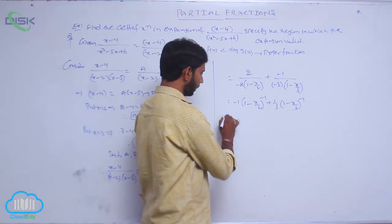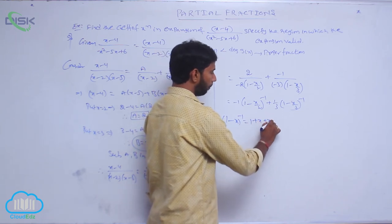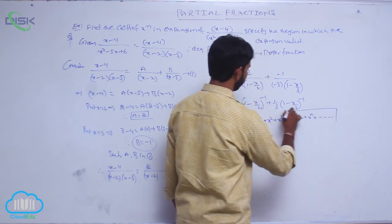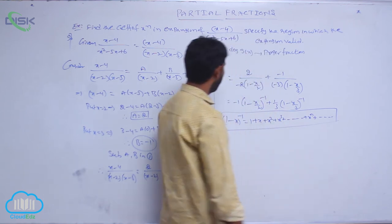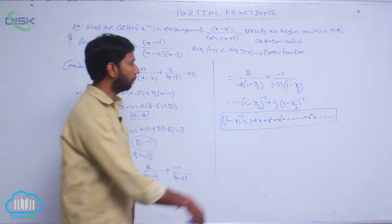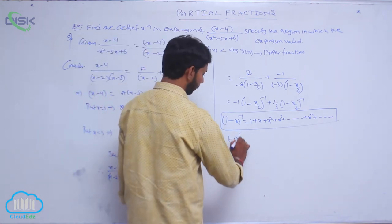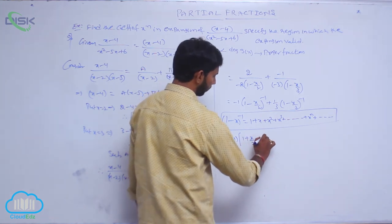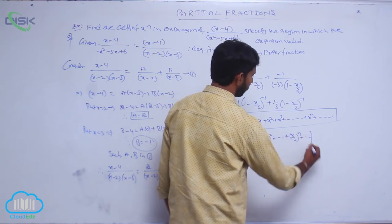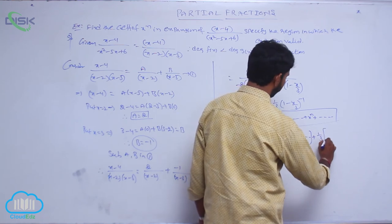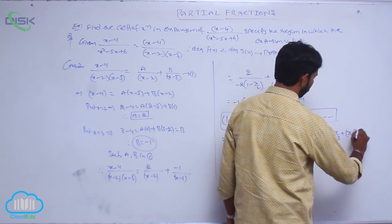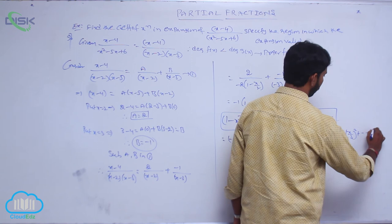The formula is (1 minus x)^(minus 1) equals 1 plus x plus x squared plus x cubed plus ... plus x^n plus and so on. Applying the formula: minus 1 times (1 plus x/2 plus (x/2)^2 plus ... plus (x/2)^n plus ...) plus (1/3)(1 plus x/3 plus (x/3)^2 plus ... plus (x/3)^n plus ...).